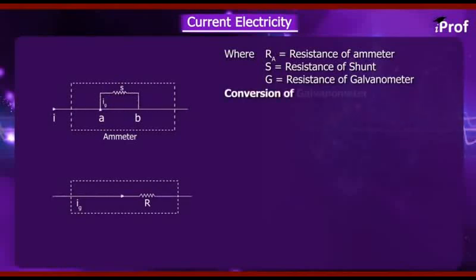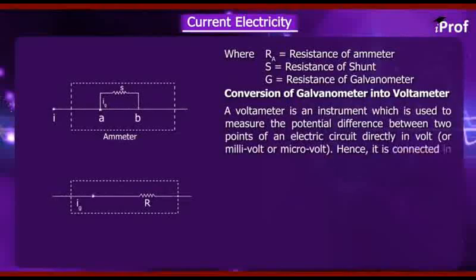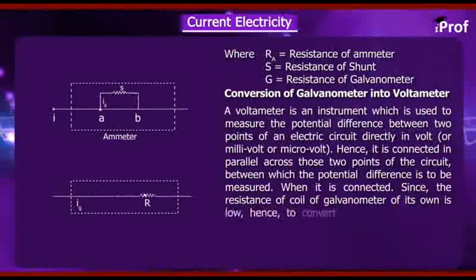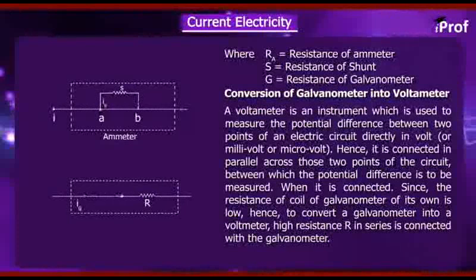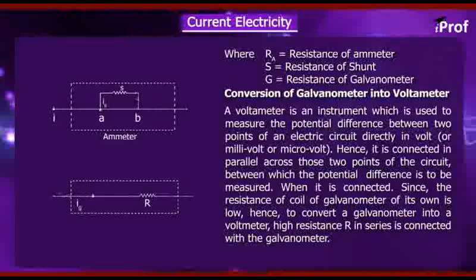Now, let's see conversion of galvanometer into voltmeter. A voltmeter is an instrument which is used to measure the potential difference between two points of an electric circuit directly in volt or millivolt or microvolt. Hence, it is connected in parallel across those two points of the circuit between which the potential difference is to be measured.